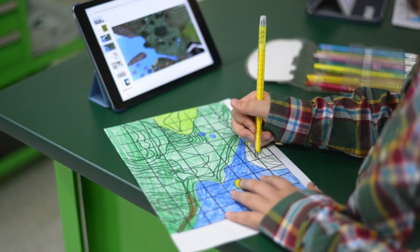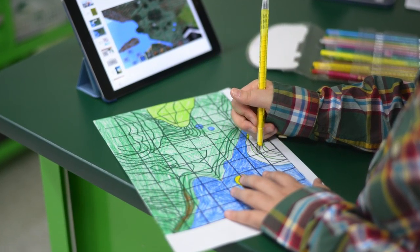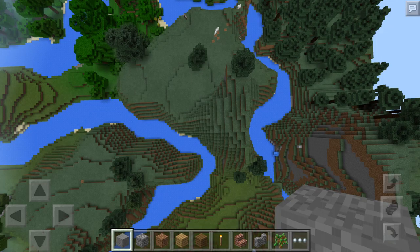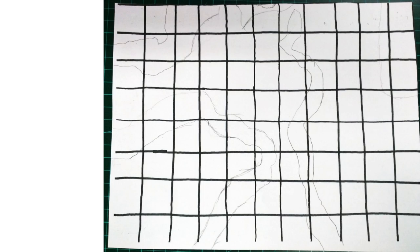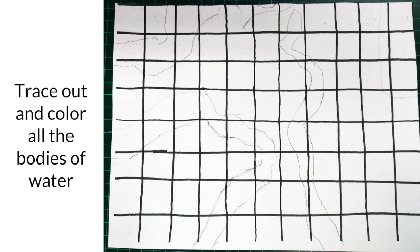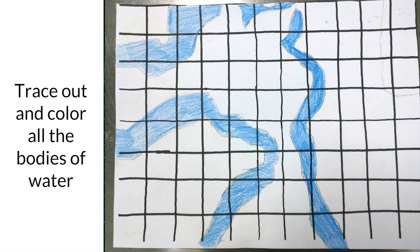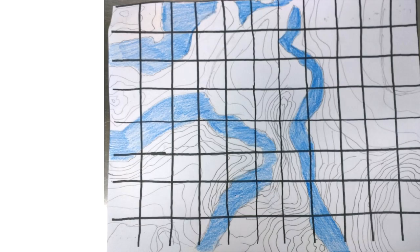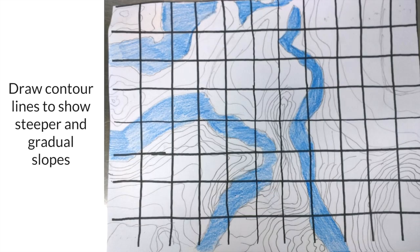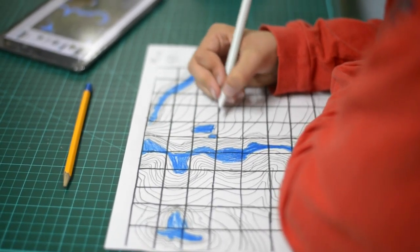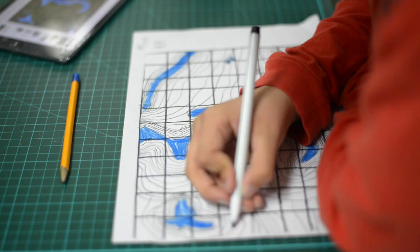They used their newly acquired knowledge to create a topographic map of their Minecraft region. First, we had students place a grid over their screenshot. Then they traced out the bodies of water and colored them blue so that they could clearly see the landforms left over. From there, students drew in their contour lines for their mountainous regions, where steeper grounds were represented with closer drawn contour lines, while flatter grounds were represented with farther apart contour lines.